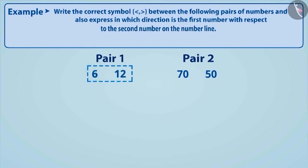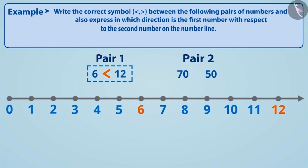Number 6 is smaller than number 12, so 6 is located on the left side of 12 on the number line.